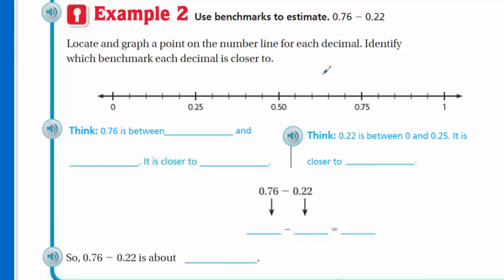How about Example 2? Same thing. Use benchmarks to estimate. Locate and graph a point on the number line for each decimal. Identify which benchmark each decimal is closer to. I look at 0.76. Well, over here, here's 0.75 right away. That one's going to be right there, pretty close. Assuming that we have the same five hundredths intervals, we still have 0.05 as the interval of each one of these. It's like an increment of 0.05 on our number line. Then we have 0.22. We looked at that being 20, so 0.22 is going to be very, very close. This one here is between 0.75 and 1. It is closer to 0.75. Over here, this one's obviously between 0 and 0.25. It is closer to 0.25. It's almost on top of it.